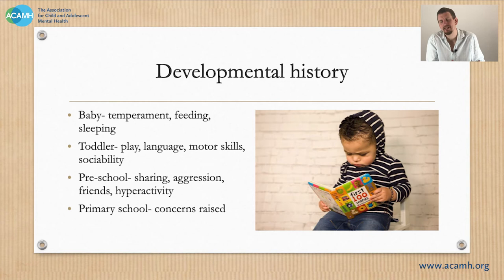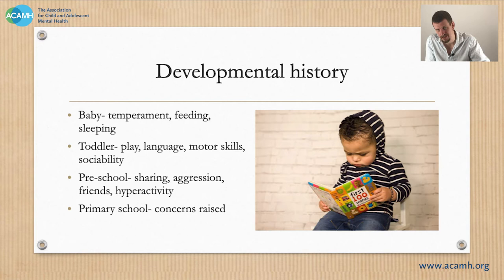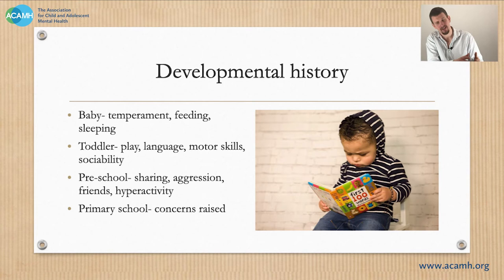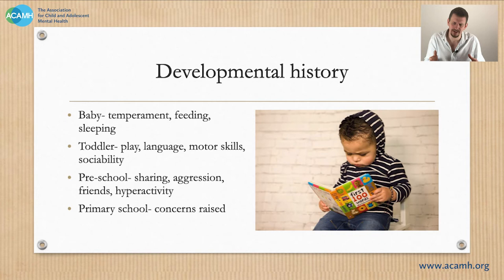The classic example is a child where the parent perfectly understands all of their language and considers them perfectly able to express themselves, and yet when you assess them they have language skills on the 0.1 centile. The parent is not pulling your leg — they have just adapted their communication style and expectations to the child whom they have spent all their lives with. You almost can't see the wood for the trees after a while because you have adapted so profoundly.